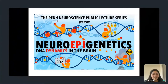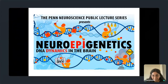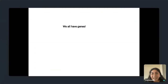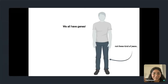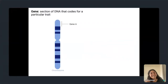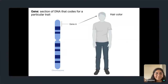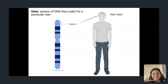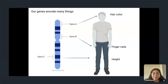We all have genes — but not those kind of genes. Genes are sections of DNA that code for particular traits. For example, a gene can encode for hair color, fingernails, and even your height. But the point is that genes can encode for many things, and there's more to it than you might think.